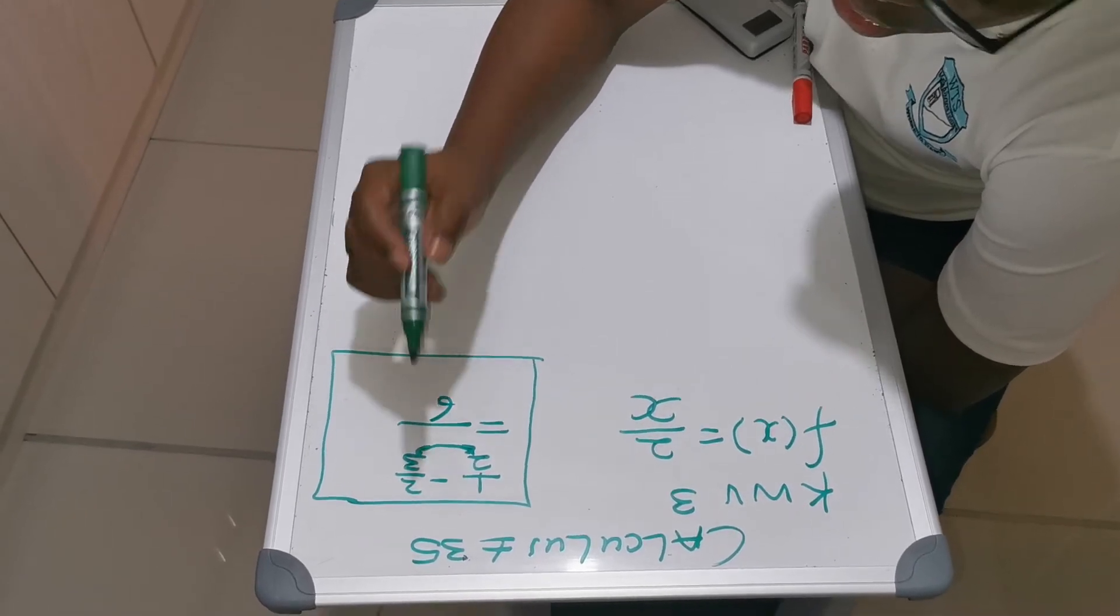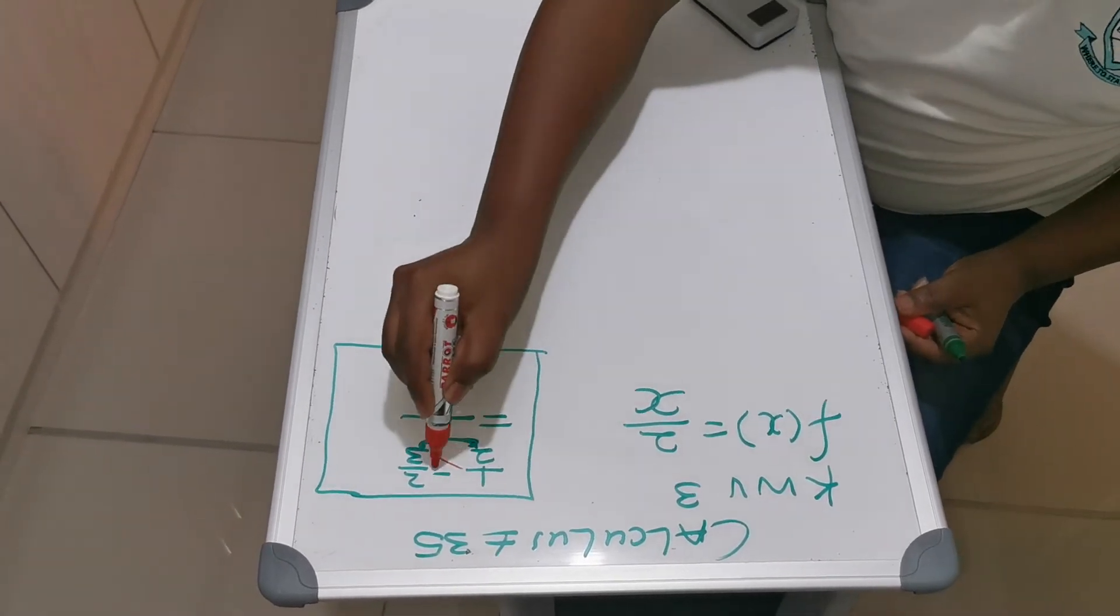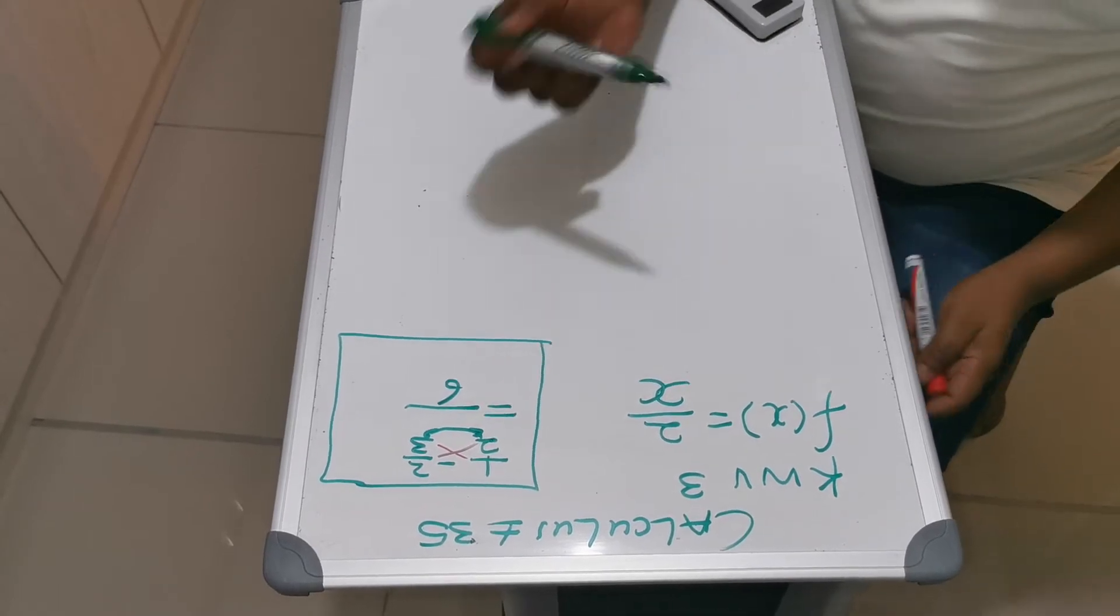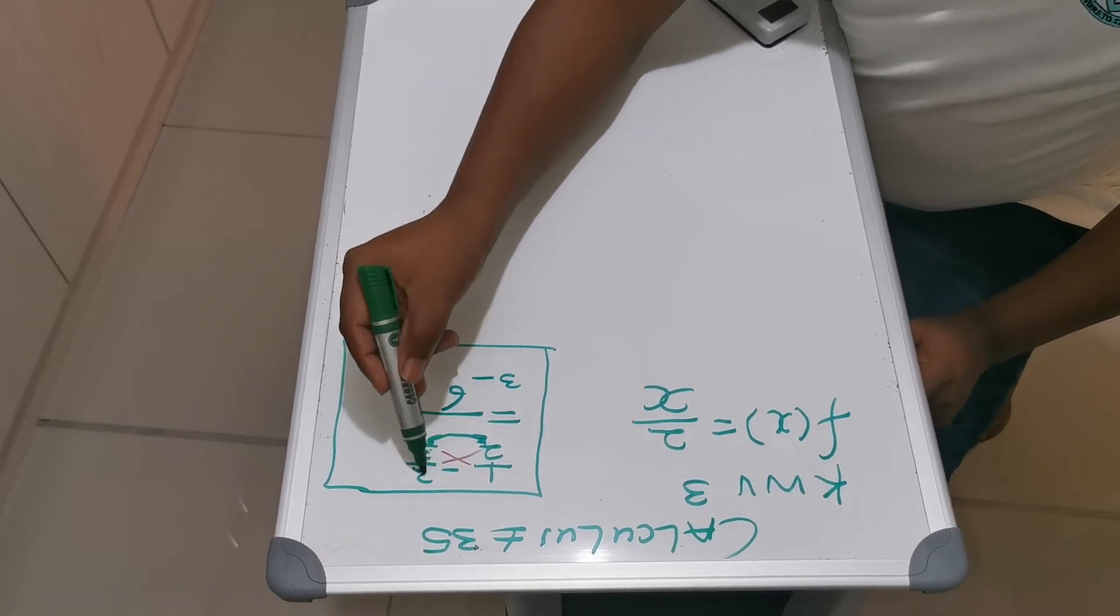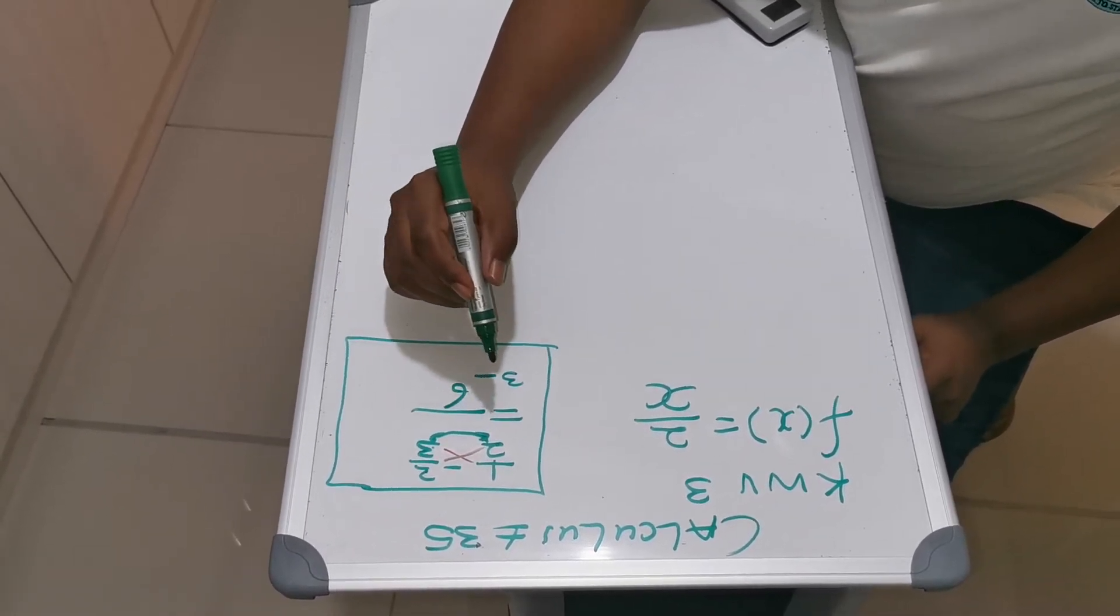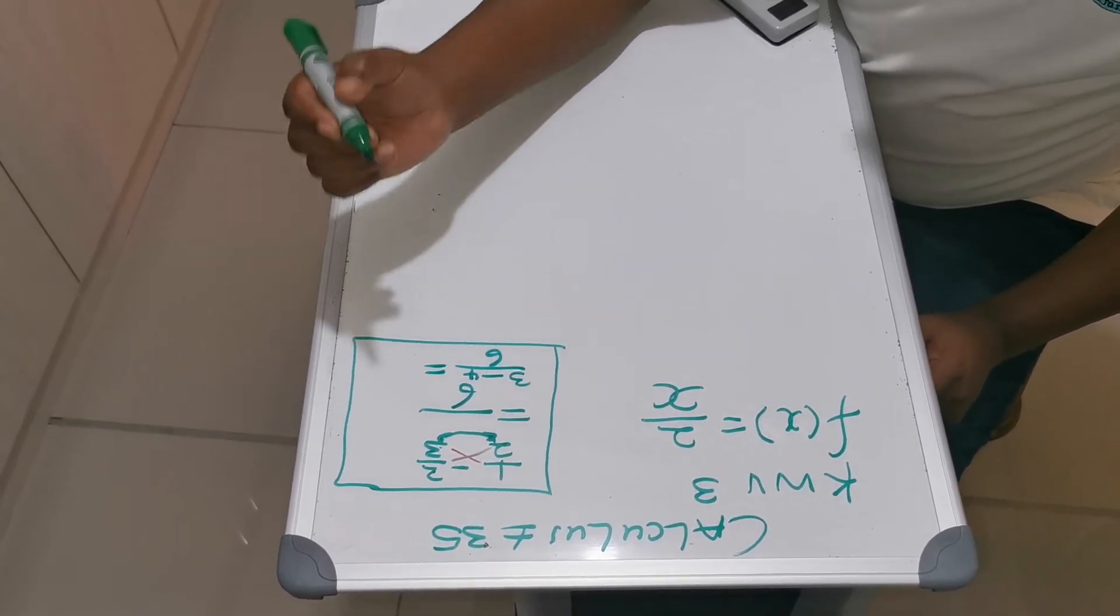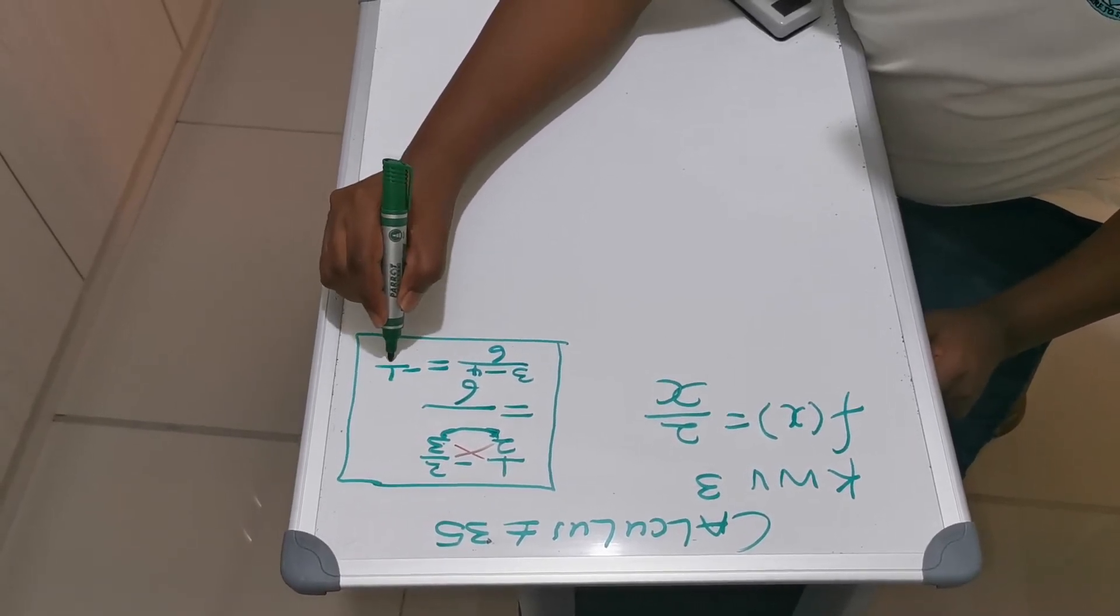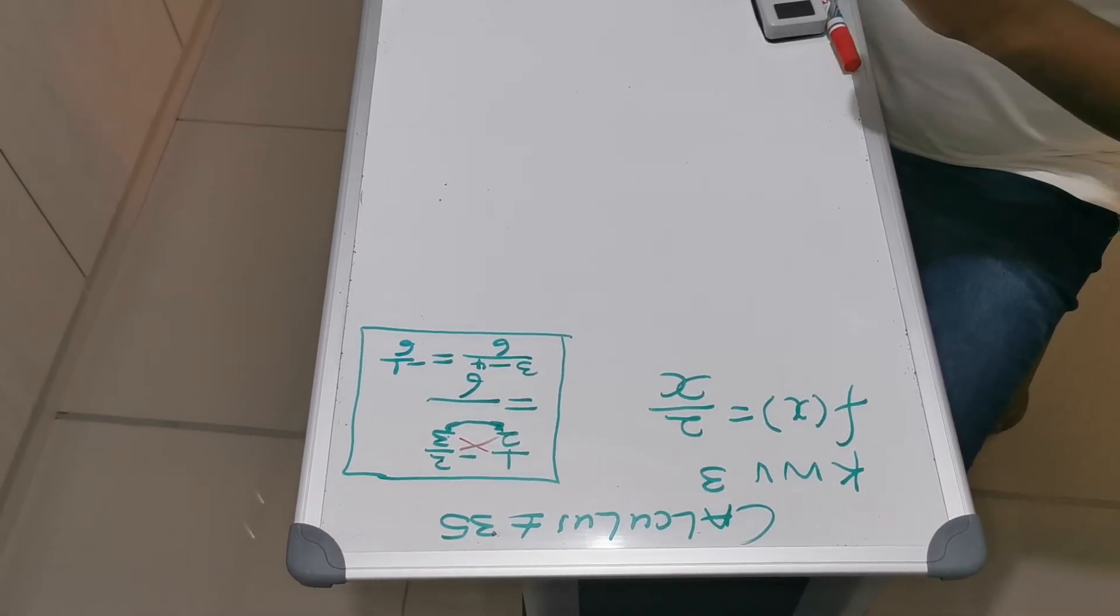Then after that, you cross multiply. Which means 3 times 1, this is 3. Then you say negative 2 times positive 2. This will give you 4 over 6, which means your final answer here would be negative 1 over 6. That is what you did for grade 8.